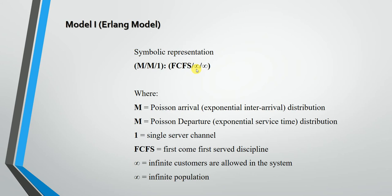The first M represents Poisson arrival or exponential inter-arrival distribution. Generally in queuing problems, the Poisson distribution is used for arrivals. The second M represents Poisson departure or exponential service time distribution. In queuing models, the second M generally represents the exponential service time distribution.